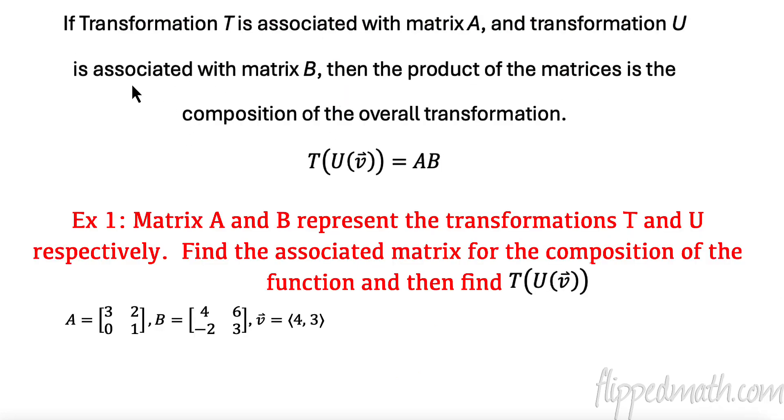Now, I know this is really wordy. If transformation T is associated with matrix A, and transformation U with matrix B, the product of these matrices is actually going to be the composition of the function. So I could do A and B, and I can multiply them together, and it'll be the overall composition, the transformation. That's amazing.